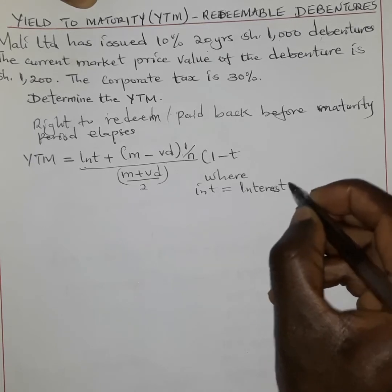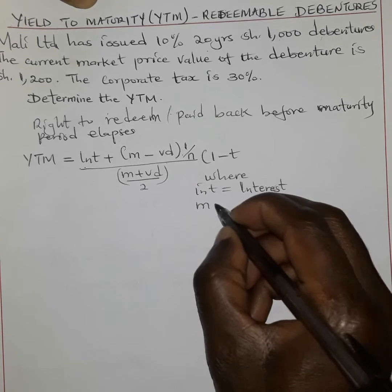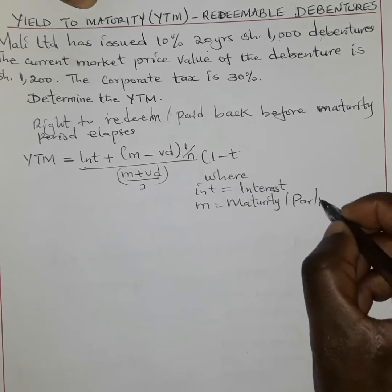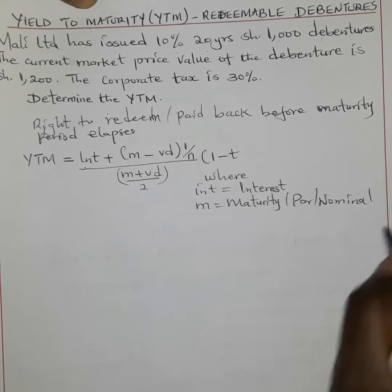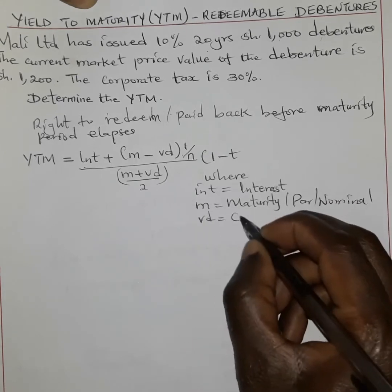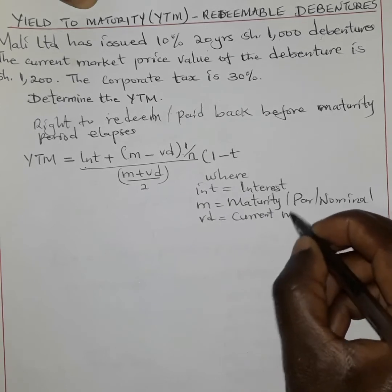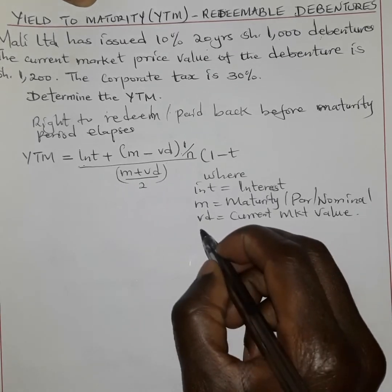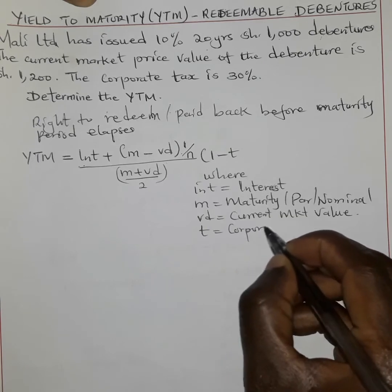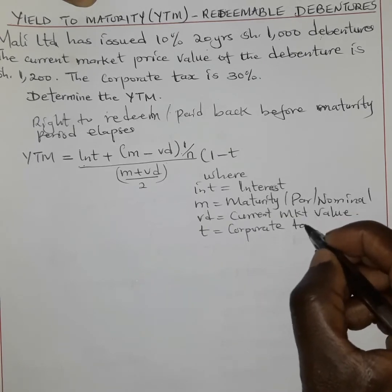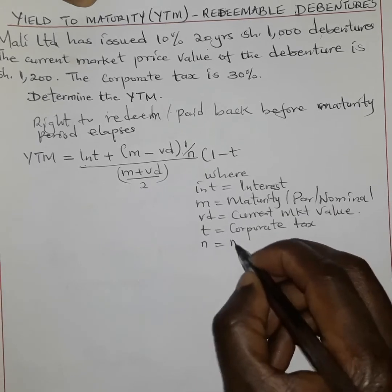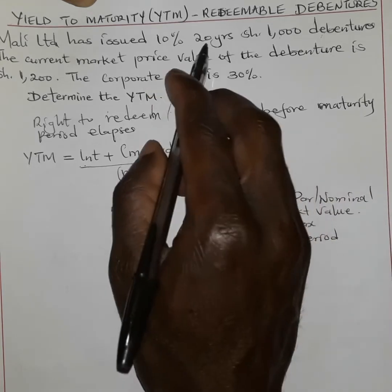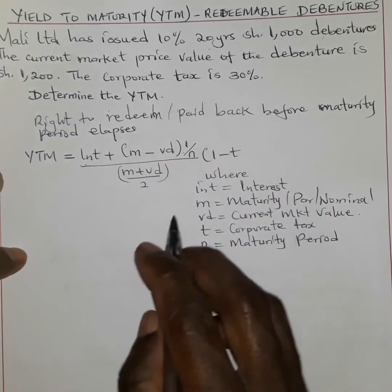In this formula: INT is the interest; M is the maturity or par value — the nominal value written on the debenture; VD is the current market value, that is the value of the debenture as it is trading in the market; t is the corporate tax chargeable on the debenture; and n is the maturity period — in this case the debenture is 20 years, so our n is 20.